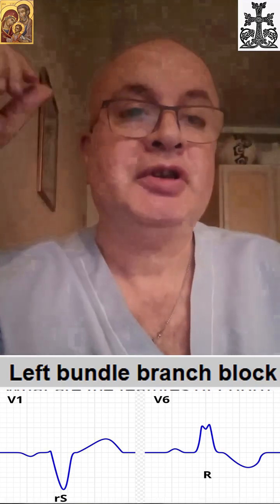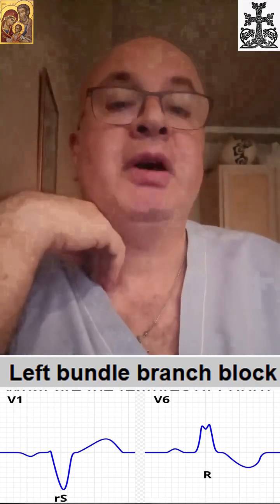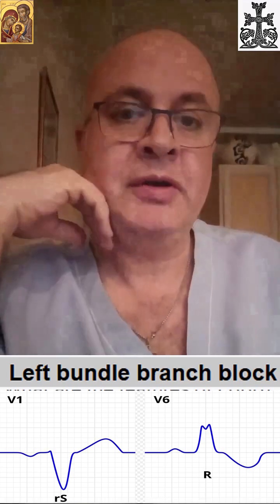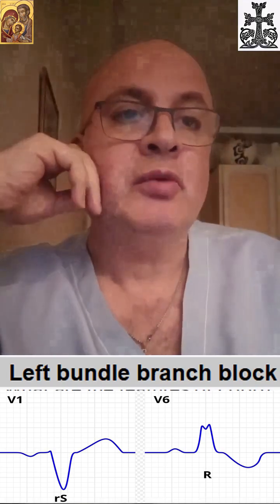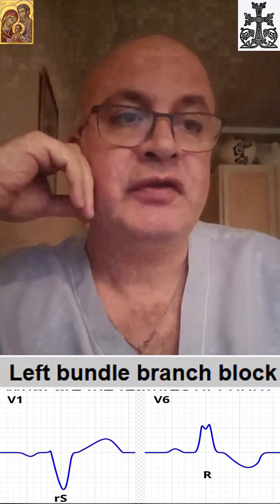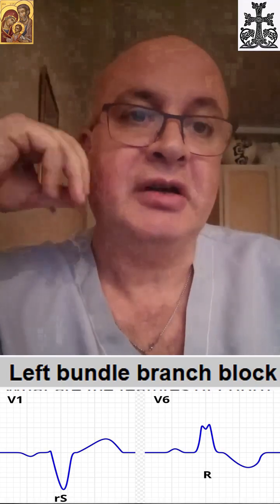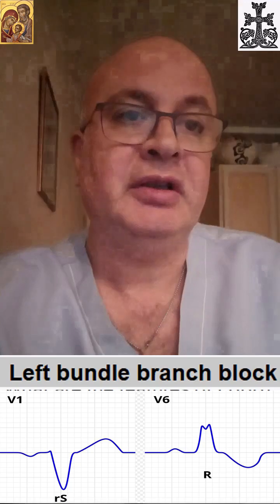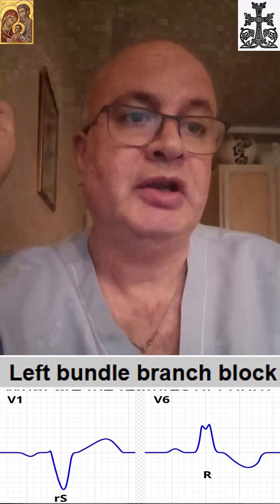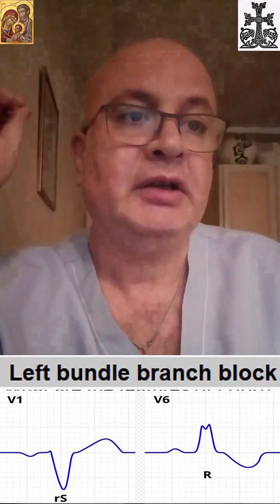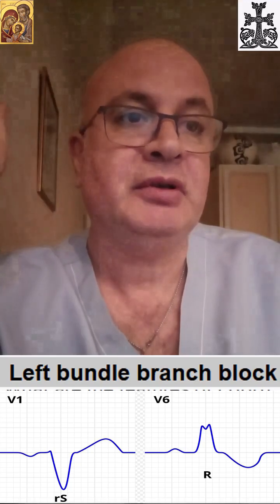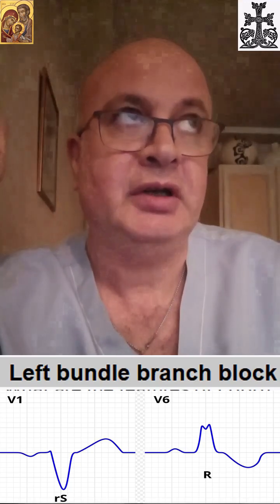Hi folks, today's question is about left bundle branch block. What are the features of left bundle branch block? One option is: there is a delay or blockage of electrical impulses to the left side of the heart.